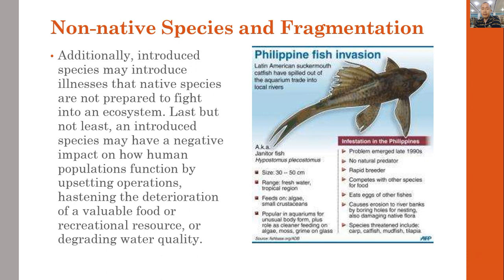An example is the Philippine invasion of the suckermouth fish, which spilled out from the aquarium trade into local rivers — known as the janitor fish. With no natural predators and being a rapid breeder, it competes with other species for food. Our more desirable fish have difficulty growing and reproducing, as the janitor fish eats the eggs of other fish, can cause erosion to river dams, and threatens carp, bangus, and tilapia, which are more desirable for human consumption.